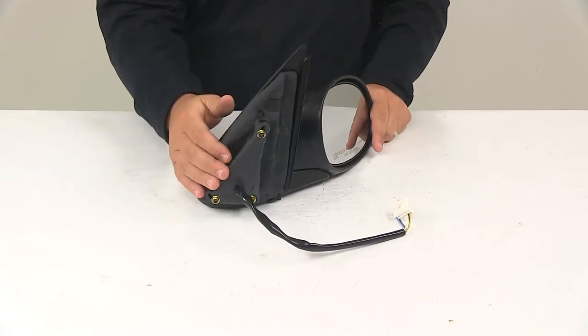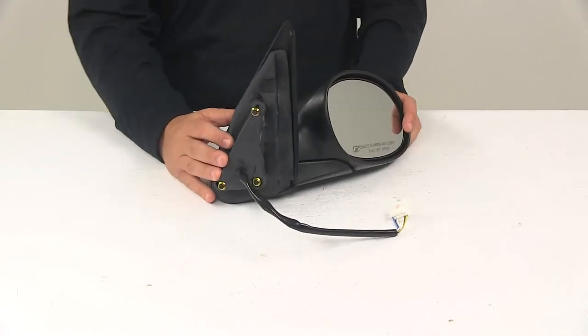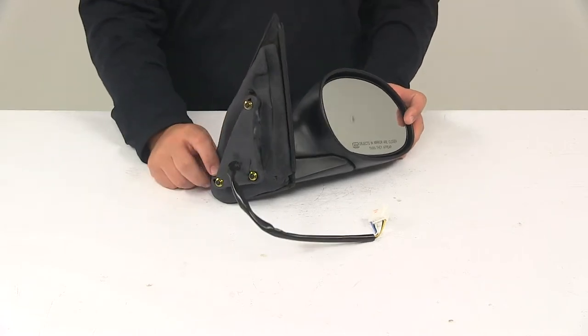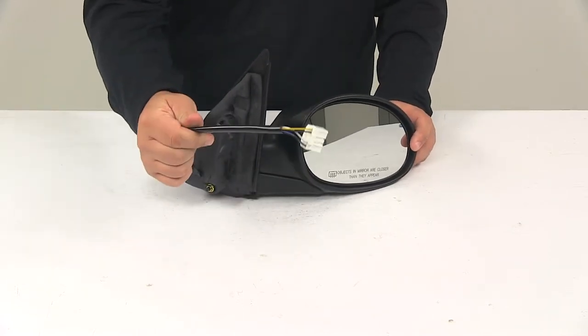Easy no drill installation. It's going to use the same footprint and mounting points as your factory mirror. You're going to have your three mounting studs and it's going to come with nuts for each stud. And then the mirror is going to plug into the existing electrical wiring.